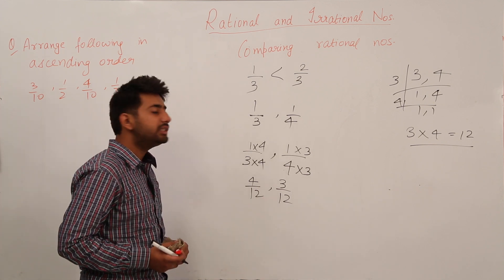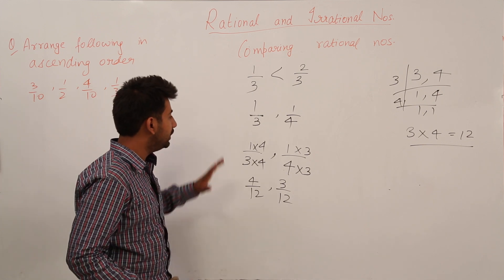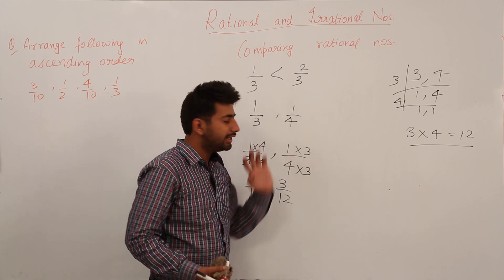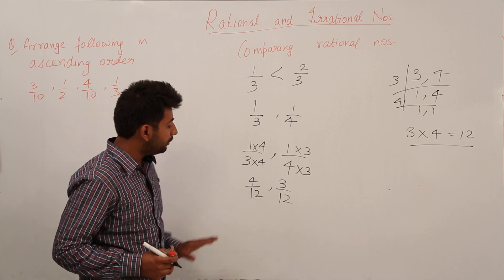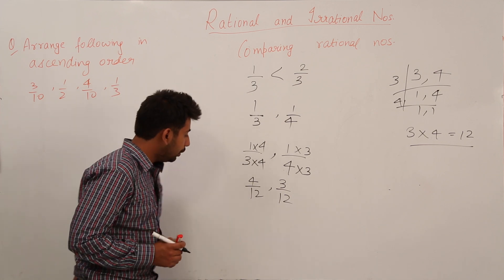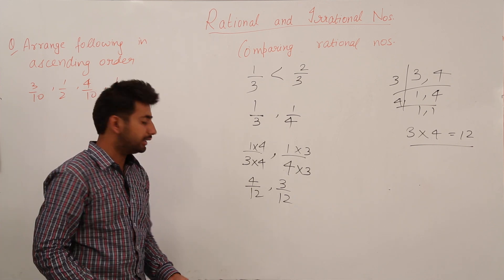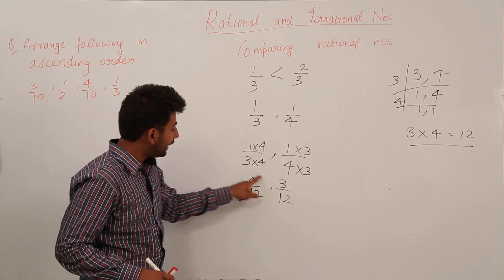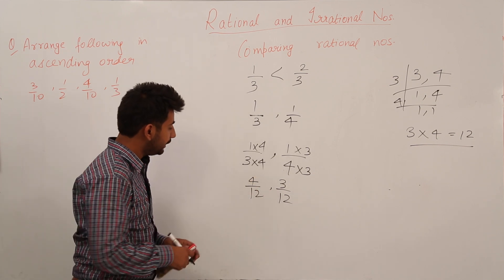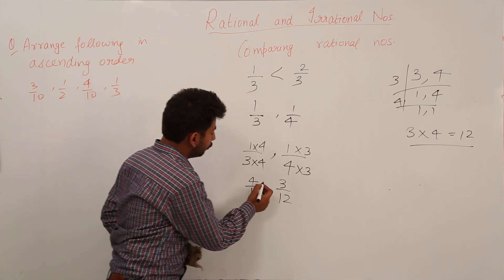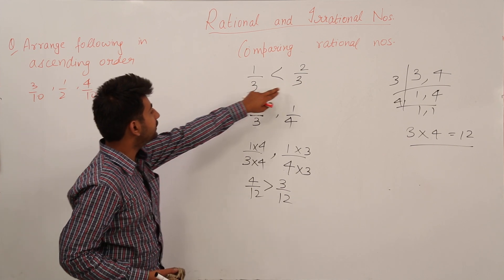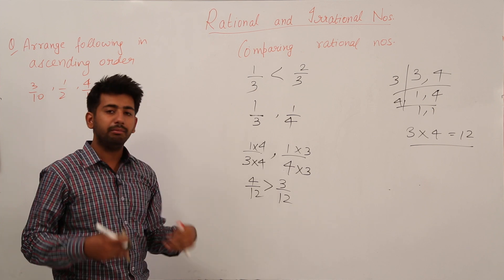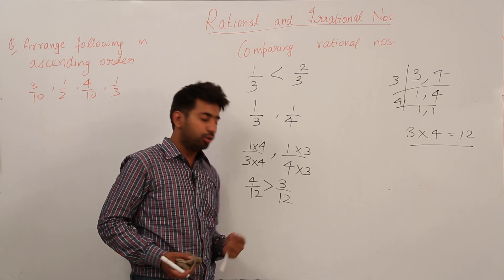Just the representation is different; both rational numbers are actually equal to their original forms when reduced. Since the denominators are now the same (12), we can compare the numerators: 4 is greater than 3, so 4/12 is greater than 3/12, meaning 1/3 is greater than 1/4. If denominators are same, compare numerators directly; if not, first make them equal by taking the LCM, then compare numerators.